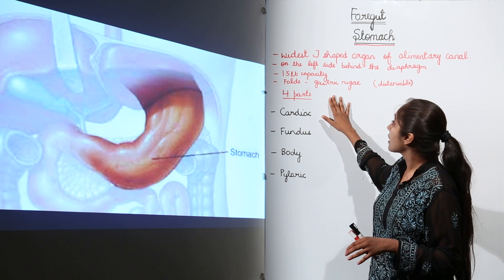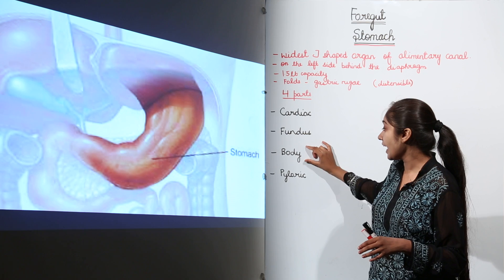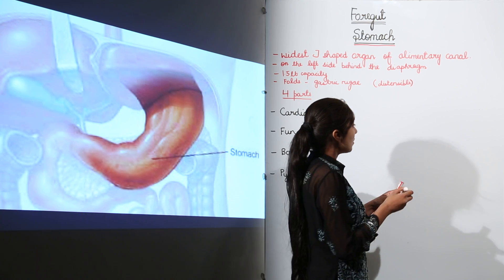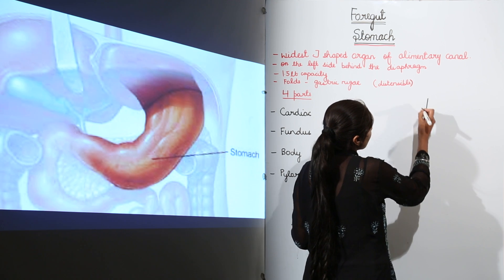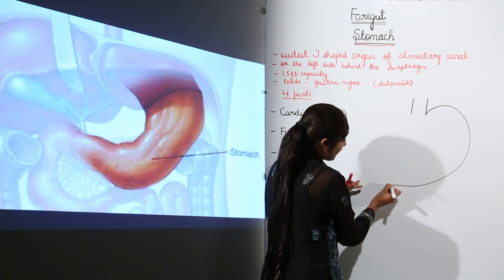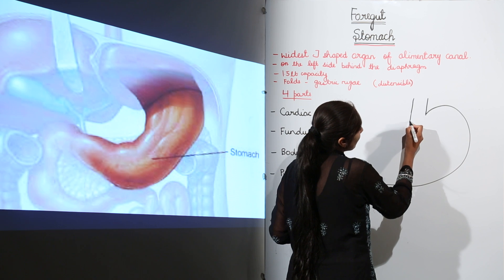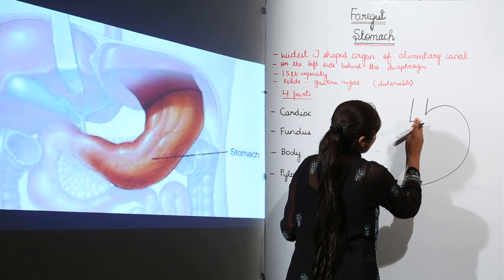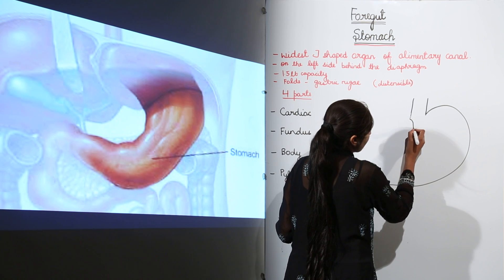The stomach has four parts: cardiac, fundus, body, and pyloric. We are going to draw the diagram of the stomach now. Since it is a J-shaped organ, just draw it along with me in your notebooks — it is very simple.